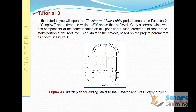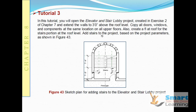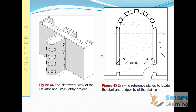In this tutorial, we will do a couple of works. If you see the elevator and stair lobby project created in exercise 2 of chapter 7, we will extend the walls to 3 feet above the roof level, copy all the doors, windows, and components at the same locations up to the upper floor. Also create a flat roof for the stairs at the roof level and add stairs to the project. This is the final output — this is what we have extended from the roof level, the walls. The gross wall height you have to change.